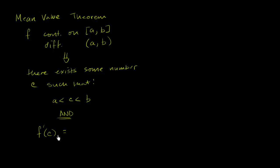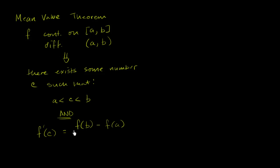essentially the average rate of change over the interval, or the slope between the two endpoints. The slope between the two endpoints is your change in y — which is f of b minus f of a — over b minus a.